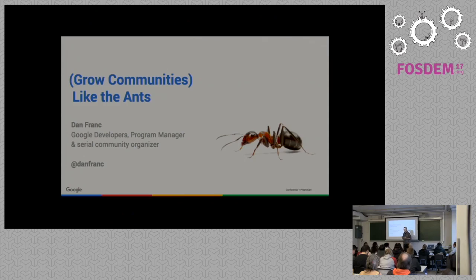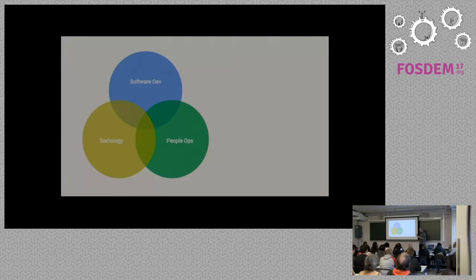I went to business school; they didn't teach me how to do that. They taught all kinds of hierarchical ways. But ants are representative of what we call complex adaptive systems, and I will show you today how you can use it for your work.